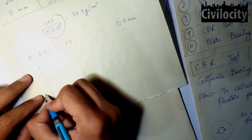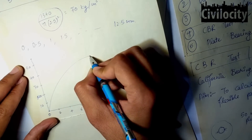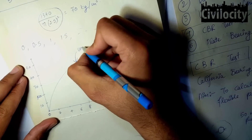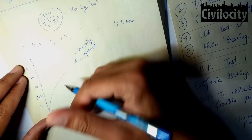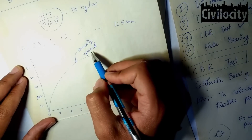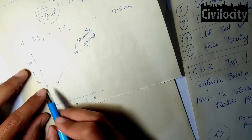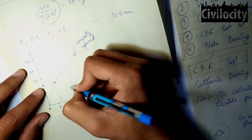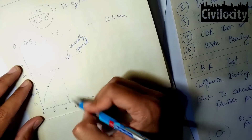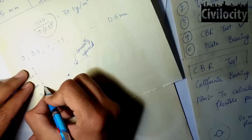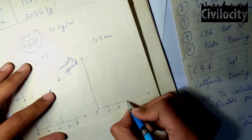When we plot the graph, we get two types of curves. If the curve has its convexity upward, then the recorded values are correct and no correction is required. From this curve, you can find the load values at 2.5 mm and 5 mm penetration by drawing horizontal lines from those x-axis values to the curve and reading off the corresponding load on the y-axis.